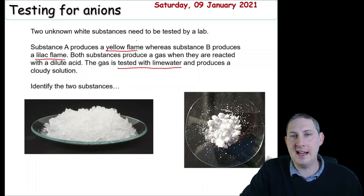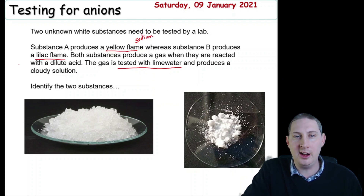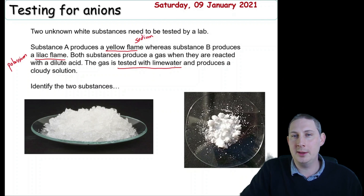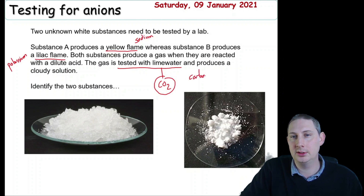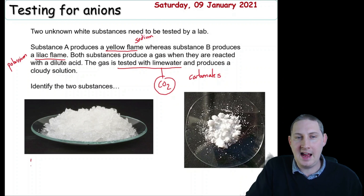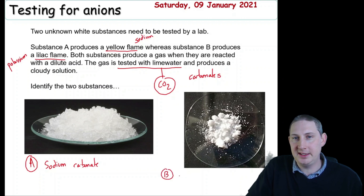A yellow flame is produced by sodium — a yellow-orange flame. A lilac flame is produced by potassium. The gas tested with lime water to produce a cloudy solution should be recognised as carbon dioxide, CO₂. Since year eight you know that carbonates produce carbon dioxide when they react with an acid. So substance A is sodium carbonate and substance B is potassium carbonate.